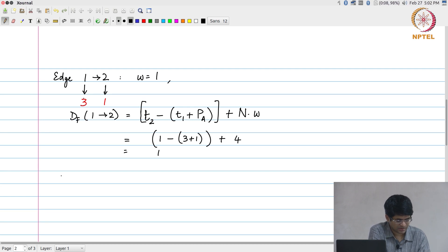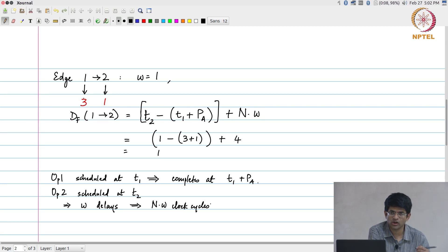Another way of looking at this is operation 1 is scheduled at time t1, completes at t1 plus pa. Operation 2 is scheduled, w delays correspond to n into w clock cycles. In other words, if I want to use the value produced by operation 1, w samples later then that will correspond to the execution of t2 at t2 plus n into w.